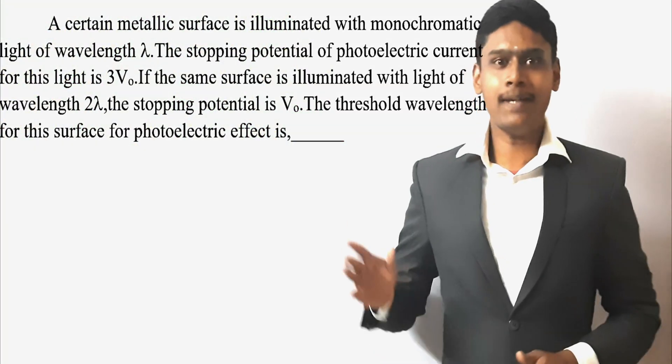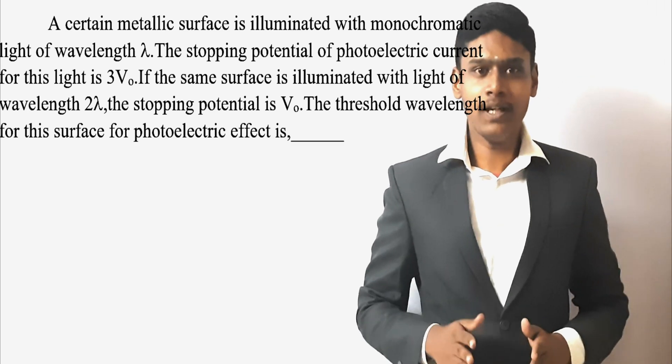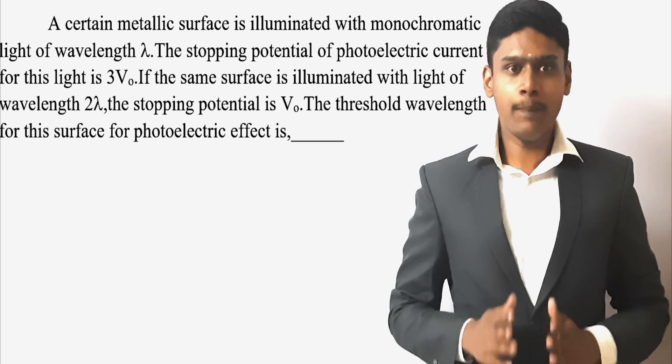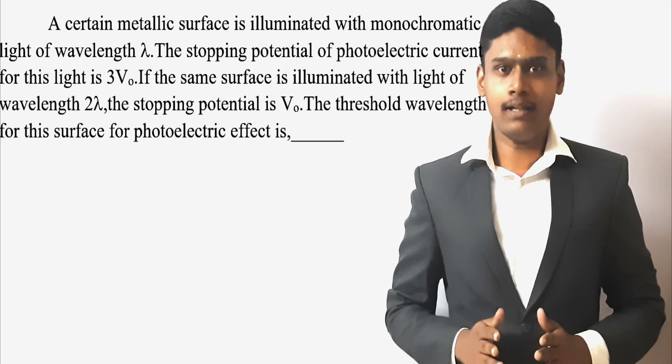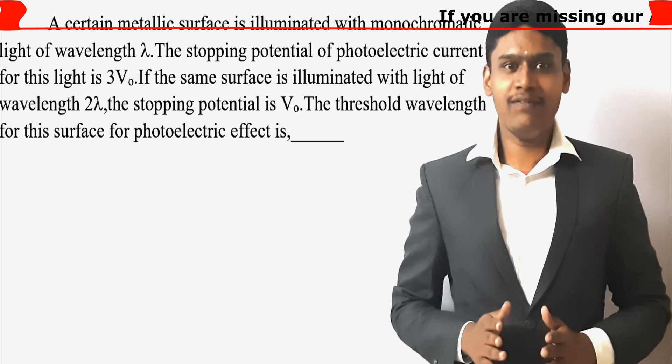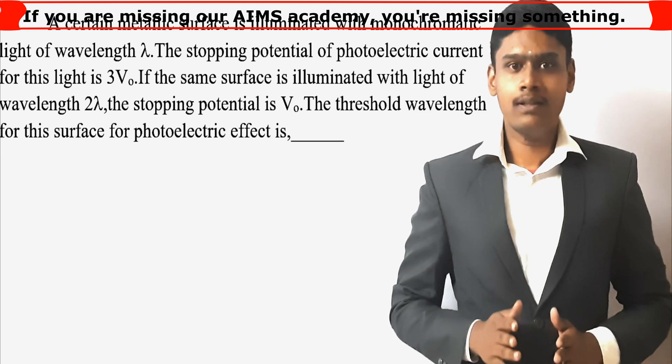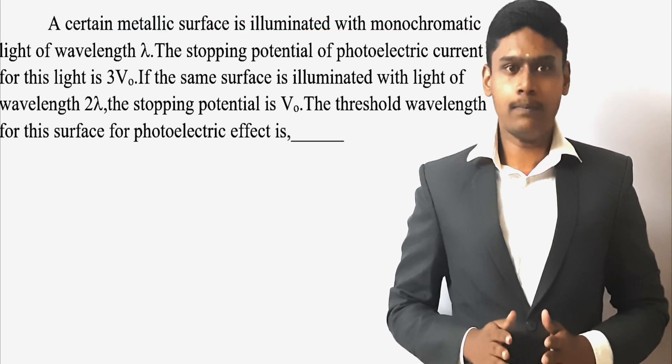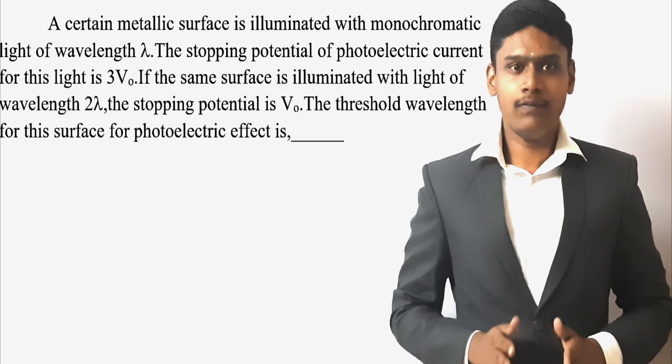The question asks: a certain metallic surface is illuminated with a monochromatic light of wavelength lambda. The stopping potential of photoelectric current for this light is 3V0. If the same surface is illuminated with a light of wavelength 2 lambda, the stopping potential is V0.